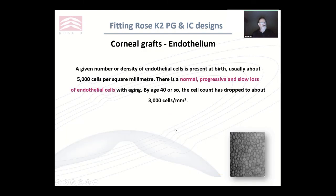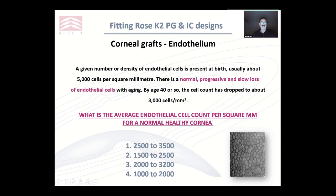I want to finish up with a couple of words of wisdom. Do have a look at the endothelium, because it is so important to keep that cornea clear. What's the average endothelial count per square millimetre for a normal healthy cornea? It's around 2,000 to 3,200. But in grafts, you can get down under 1,000, and once you start getting down under about 700 per square millimetre, you start to get problems.